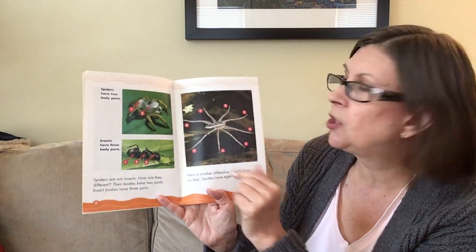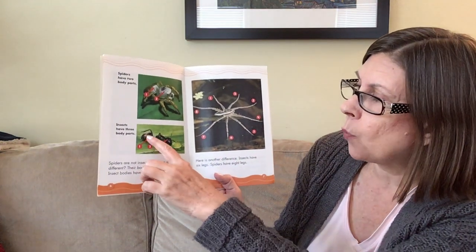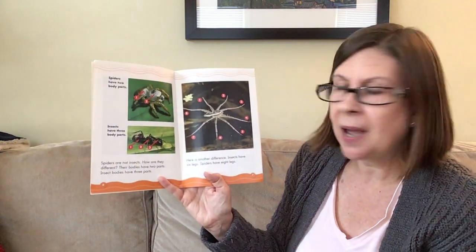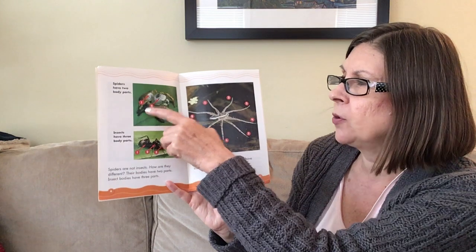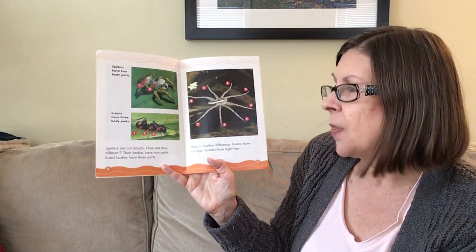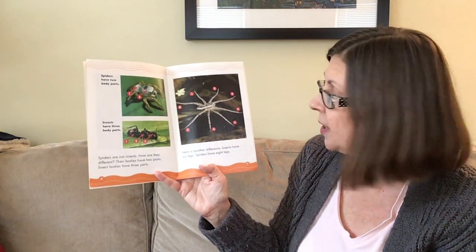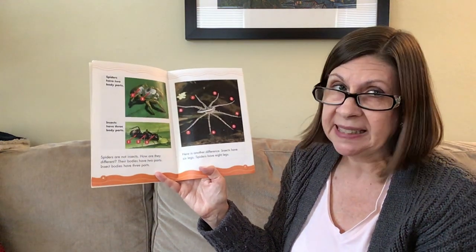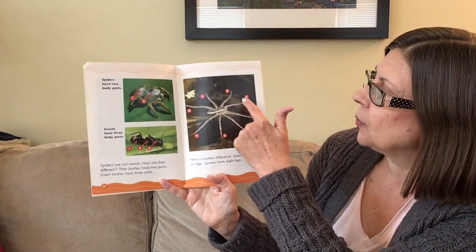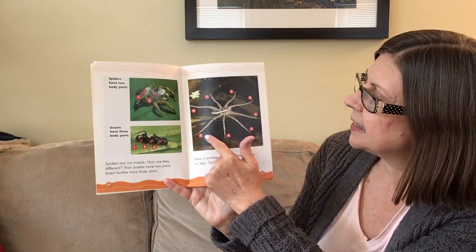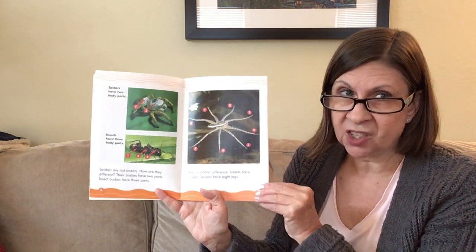Spiders have two body parts. Insects have one, two, three body parts — so that's an ant, which is an insect. But spiders just have two. Spiders are not insects; their bodies have two parts and insect bodies have three parts. Insects have six legs, but spiders have one, two, three, four, five, six, seven, eight legs — spiders have more legs than insects, they actually have eight.